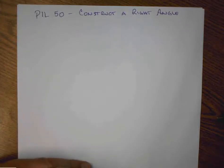Welcome back. This is Mr. Erlin. Today we're doing constructions for the PIL, or Parallel and Intersecting Lines Unit. We'll begin with PIL 50, Construct a Right Angle.